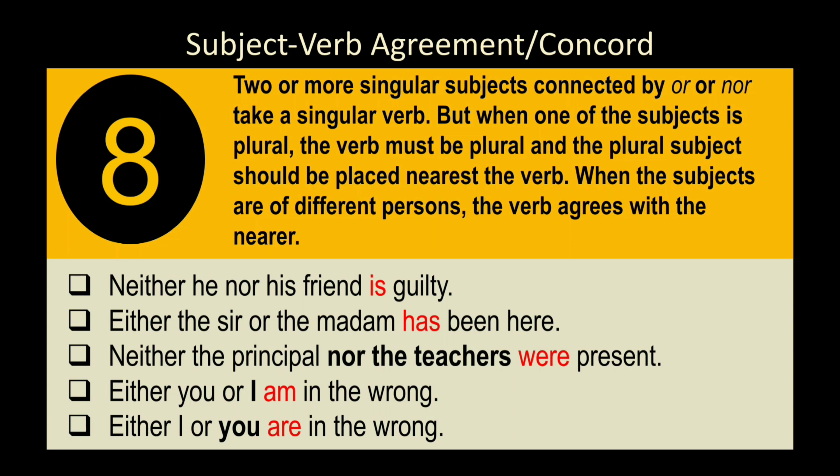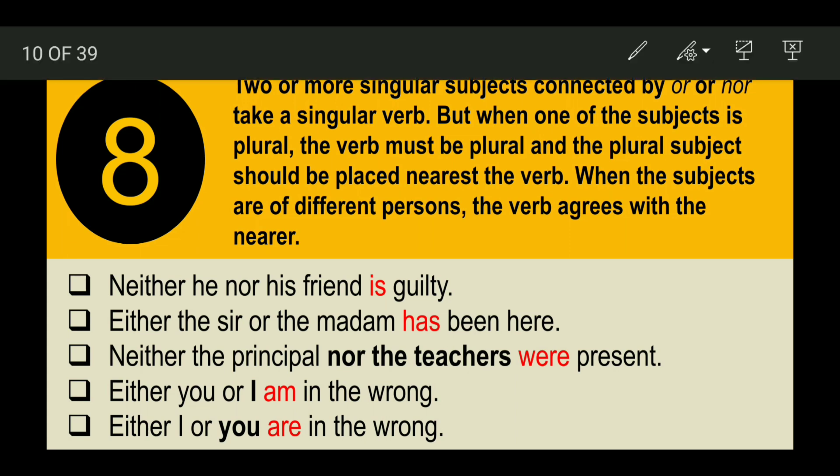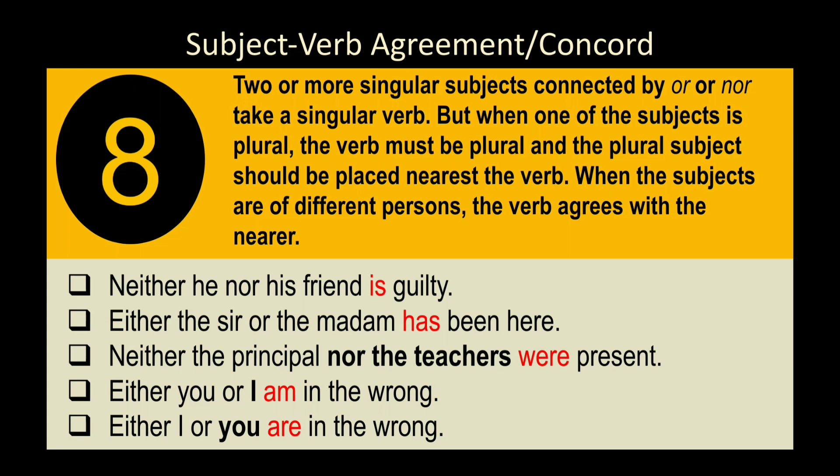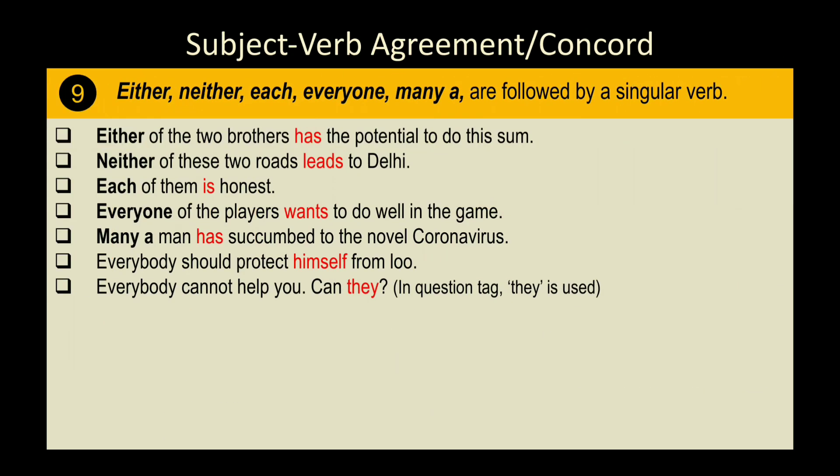'Neither the principal nor the teachers were present' — 'teachers' is plural and placed near the verb, so we use 'were.' 'Either you or I am in the wrong' — verb agrees with 'I' (the nearer subject). 'Either I or you are in the wrong' — verb agrees with 'you' (the nearer subject). The plural subject must always be placed nearest the verb.